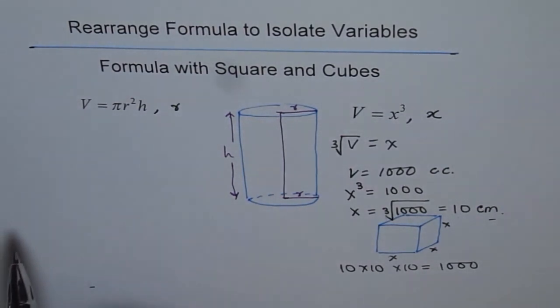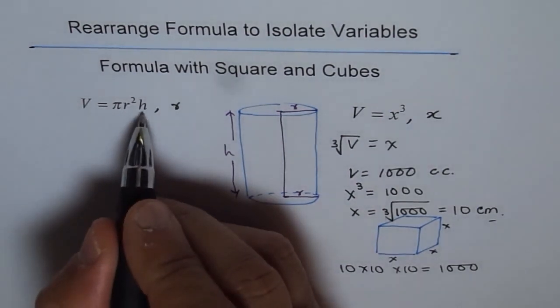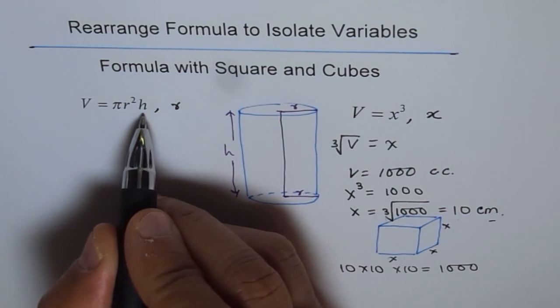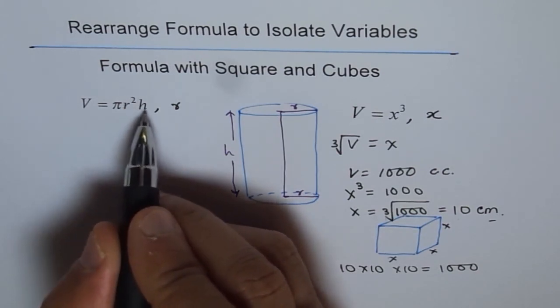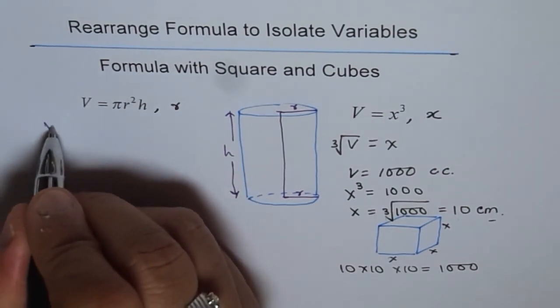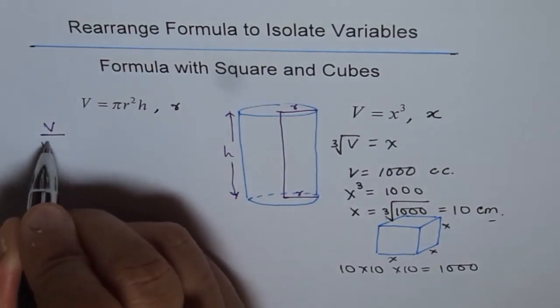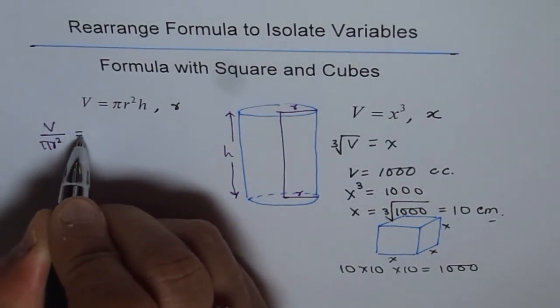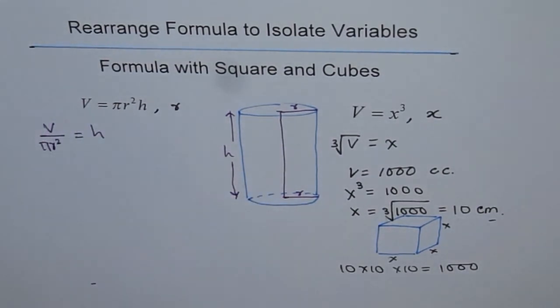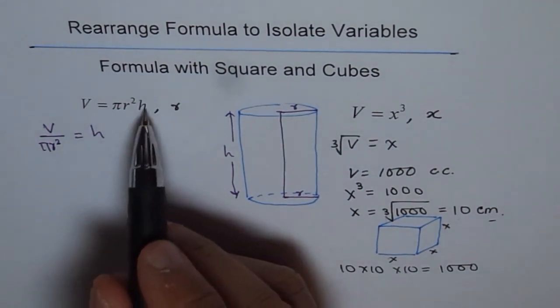Now let us say you are given the volume and if you have to find the height, how will you find height? That means isolate height. So let's try to isolate height. To isolate height, what can I do? I can divide by pi r square both sides. So I have volume divided by pi r square will give me height.